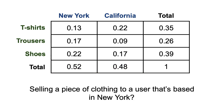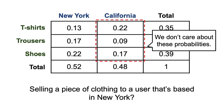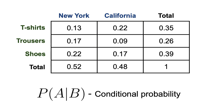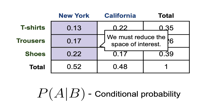Finally, what if we want to compute the probability of selling a t-shirt if we know our user is from New York? It would be tempting to say it's the joint probability of selling a t-shirt in New York — 0.13 — and you wouldn't be too far from the truth. However, we are not asking what's the probability of selling a t-shirt to a user in New York in the joint probability sense. We know that our user is in New York and we'd like to know how probable it is to buy a t-shirt, so we don't care about the California probabilities at all — just the New York ones. To take this into account, we have to compute the conditional probability of selling a t-shirt given that the user is based in New York, which is done by reducing the space we are interested in.